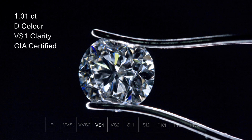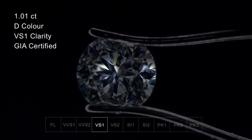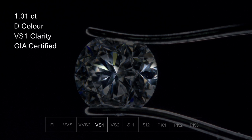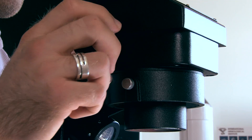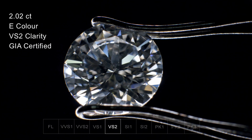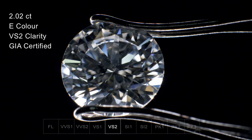The next step on the scale is VS1 and VS2, where VS stands for very small. Here the size and quantity of inclusions are getting more prevalent, although they're still not visible to the naked eye in the round brilliant cut diamond. VS2 is probably the most popular level of clarity as it's often a good balance between the appearance of the inclusions and its price. It also tends to be good psychologically, as you'll know that the inclusions in your diamond are very small and insignificant.